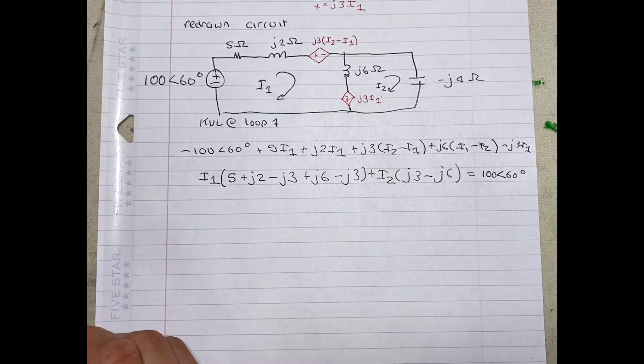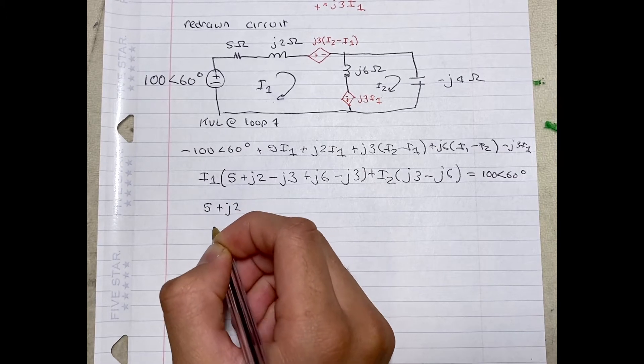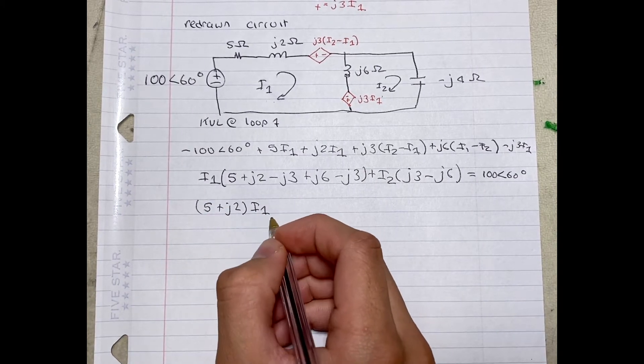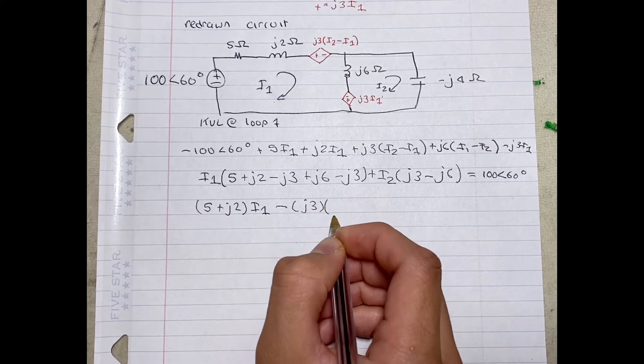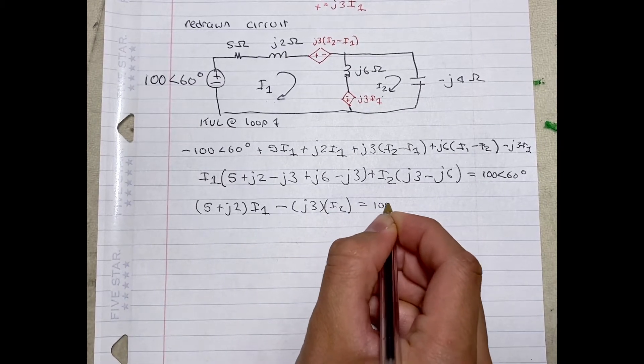Now we can simplify that further by writing it as 5 plus J2 all times I1 minus J3 times I2. And this is all equal to 100 angle 60 degrees.